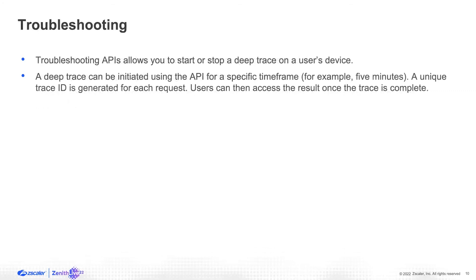With troubleshooting, the APIs will allow you to start and stop a deep trace. When you start a deep trace, we will create a trace ID and send that back to you in the response. Later, you can use that trace ID and call another API endpoint to see if the trace is complete and pull that information back if you need.